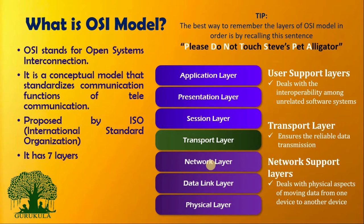The remaining three layers — Network, Data Link, and Physical — are called Network Support Layers, because they deal with the physical aspects of moving data from one device to another. The top three user support layers interact with the user, the bottom three network support layers interact with the network, and the Transport Layer exchanges information between the upper and lower layers, managing reliable connections in the network.